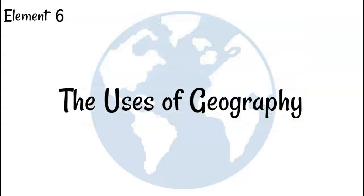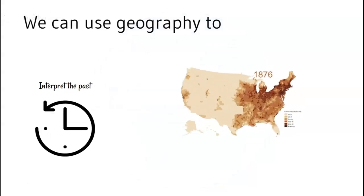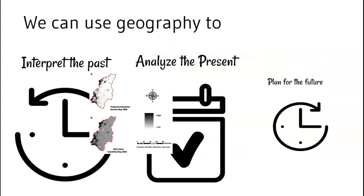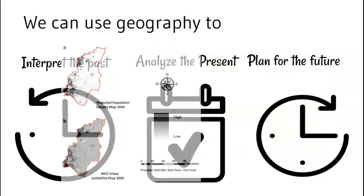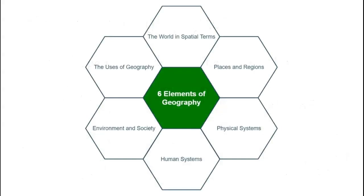The final element is the uses of geography. Geography opens a window into the world in which we live. We can use geography to interpret the past, analyze the present, and plan for the future. It helps us understand the past in order to make plans for what is to come. We will be using all six elements of geography this year to understand the world around us.